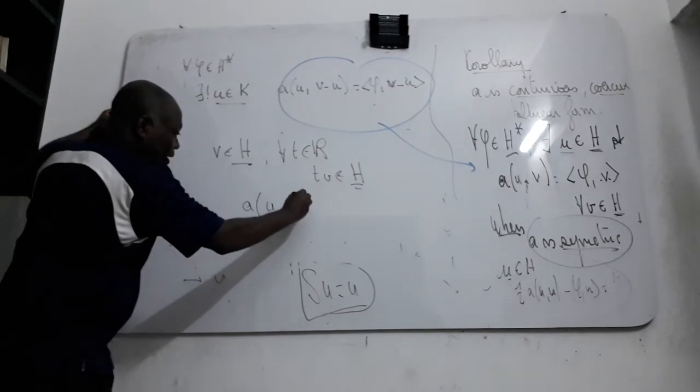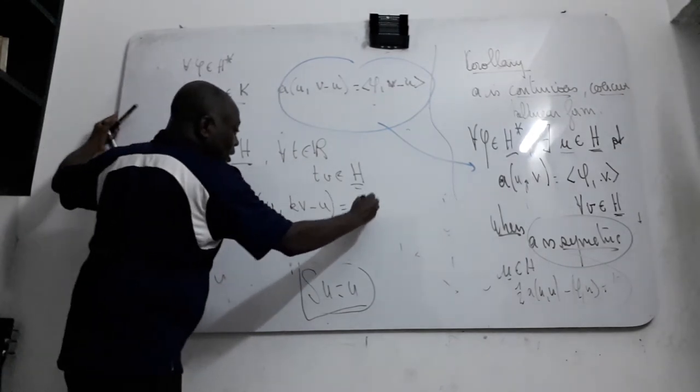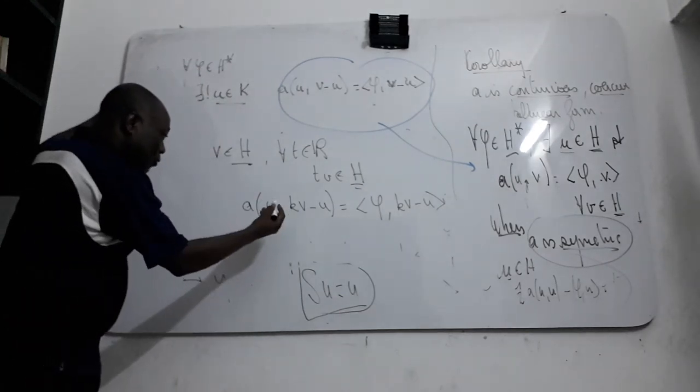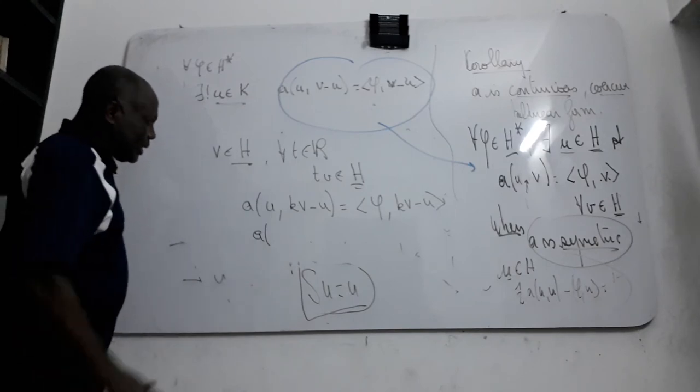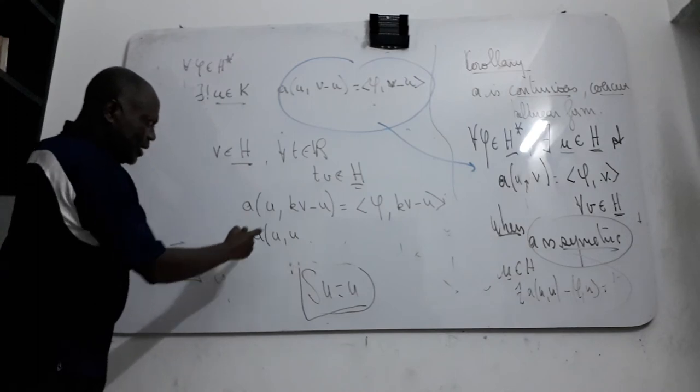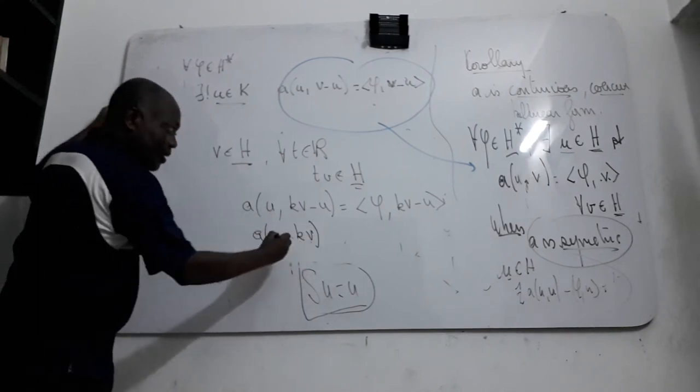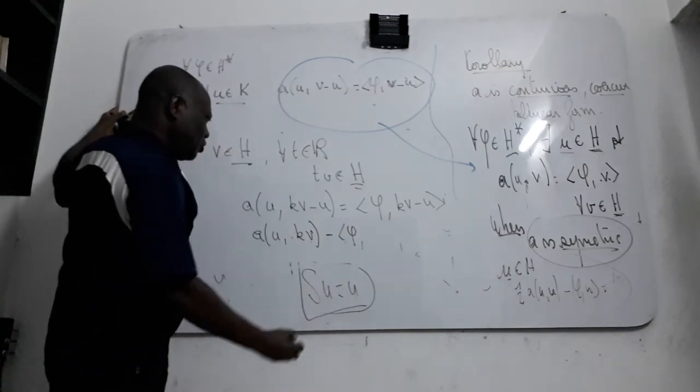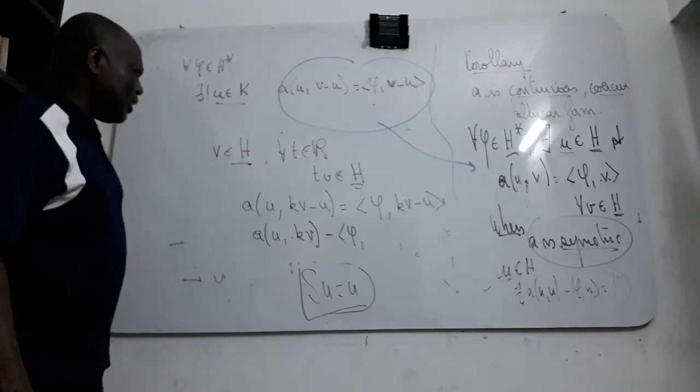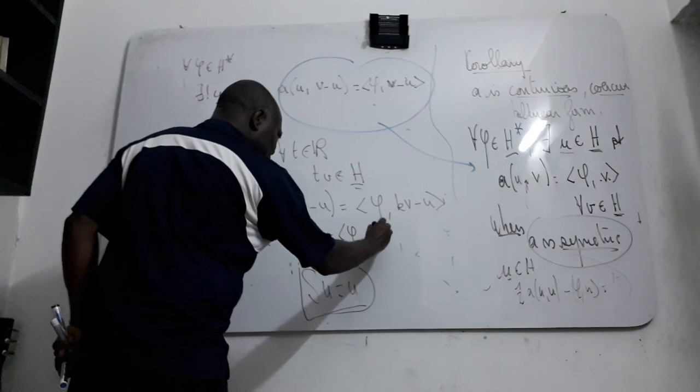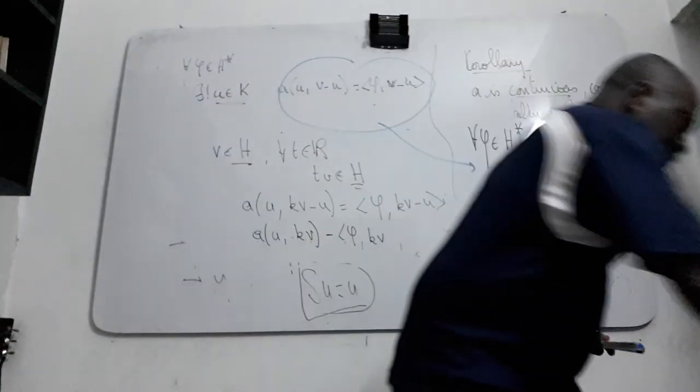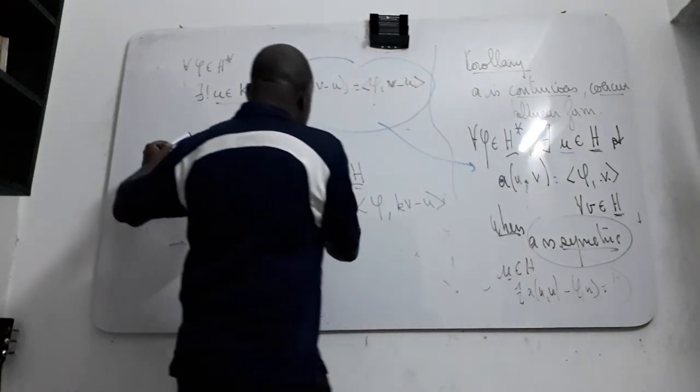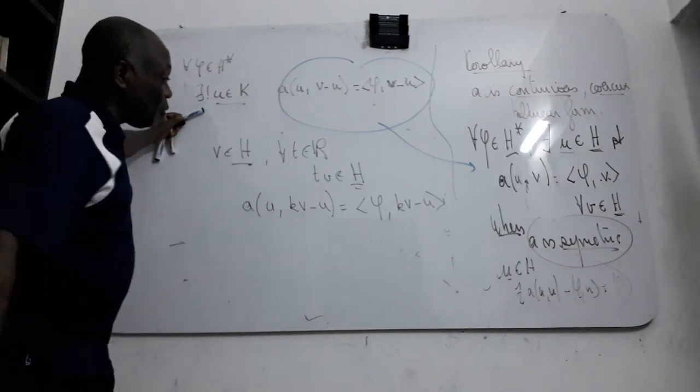U T V minus U, that's equal to phi T V minus U. You can put T outside to get the same form which we can get after.